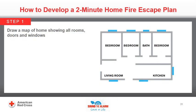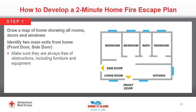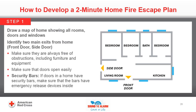Here is how to develop a 2-minute home fire escape plan. Step 1: Draw a map of home showing all rooms, doors and windows. Identify 2 main exits from home and make sure they are always free of obstructions including furniture and equipment. Make sure the doors open easily, allowing for a quick escape. Security bars: if doors have security bars, make sure the bars have emergency release devices inside so that they can be opened immediately in an emergency. Emergency release devices won't compromise security but will increase the chances of safely escaping a home fire.